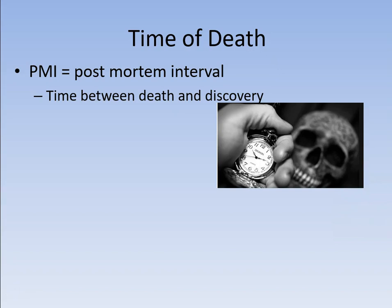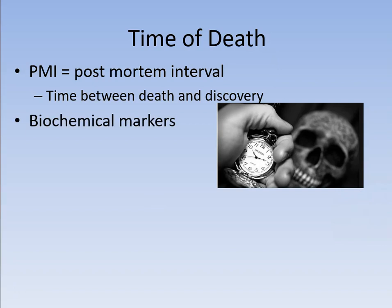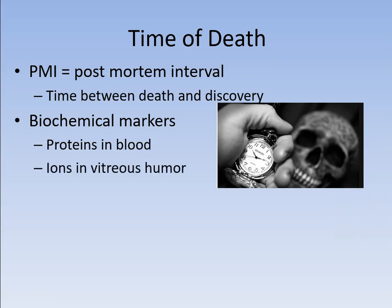The post-mortem interval is the time between the death and the discovery of the body — how long after they expired did you find them? One of the ways to estimate time of death is through biochemical markers. There could be markers in the blood that indicate when a person died, when certain processes start happening. We also talked about vitreous humor — the fluid in the eye — which can give us information as to how long since the person expired. Once you die, certain chemical processes stop, and other chemical processes start, and if you know how long they take, you can track back and figure out how long the person has actually been dead.